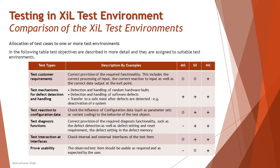The second area is testing mechanisms for defect detection and handling — a critical area covering how defect detection is done across the life cycle, with a preference for finding defects as early as possible. This includes detection and handling of random hardware faults, detection and handling of software defects, and transfer to a safe state after defects are detected — for example, deactivation of a system. This type of defect handling is recommended across any environment: MIL, SIL, or HIL.